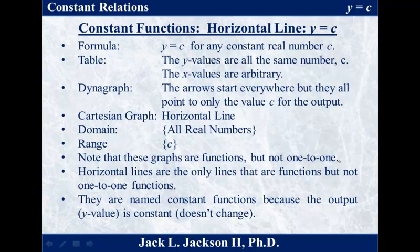So in general, when we have constant functions, they're horizontal lines — y equals c. The formula is y equals some specific number for any constant real number c. The y values are all the same number c in the table, but the x values are arbitrary. In a dynagraph, the arrows start everywhere but they only point to one value, the value c, for the output — so all the arrows point to the same thing. It's everything going to one number. As a Cartesian graph, it's a horizontal line.